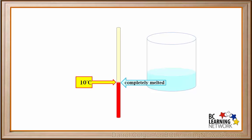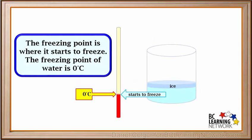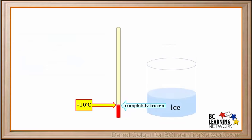Now we'll go the opposite way — we'll cool this water down. Once we reach zero degrees Celsius, the water will start to form a layer of ice on top, just like puddles freeze over in the wintertime. The temperature at which a liquid starts to freeze when cooling down is called its freezing point. The freezing point of water is zero degrees Celsius, the same temperature as its melting point. If we cool it down below its freezing point, say to minus 10 degrees Celsius, and give it enough time, the water will freeze completely into a solid.